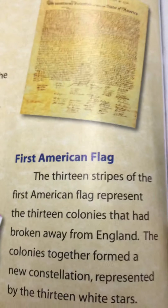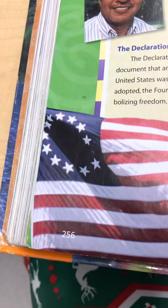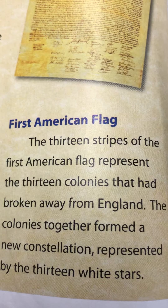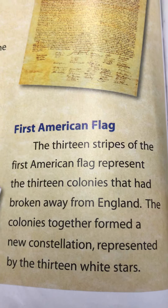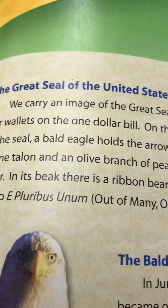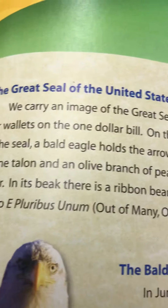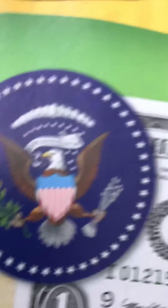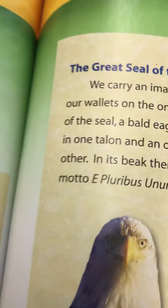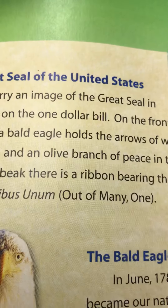And are going to this week. The first American flag: the 13 stripes represent the 13 colonies that had broken away from England. The colonies formed a new constellation, represented by the 13 white stars. The Great Seal of the United States — we carry an image of the Great Seal in our wallet; it's on the one dollar bill. On the front of the seal, a bald eagle holds the arrows of war in one talon and an olive branch of peace in the other. In its beak there is a ribbon bearing the motto, E pluribus unum — out of many, one.